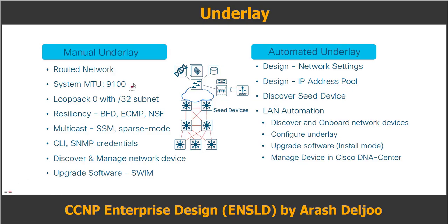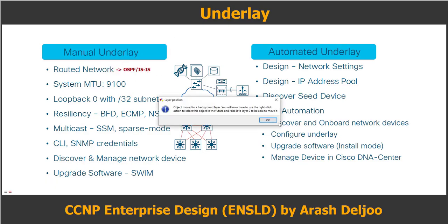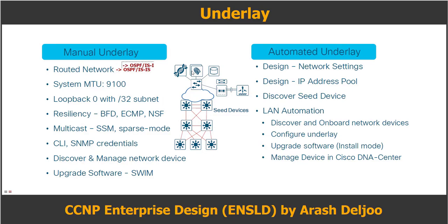If you implement the underlay manually, it is recommended to use OSPF or ISIS, but ISIS is better — it is more scalable than OSPF. In automated underlay provisioning, DNA Center uses ISIS. Also, using a routed access design prevents the need to run protocols like STP, VTP, and FHRP in the underlay network.